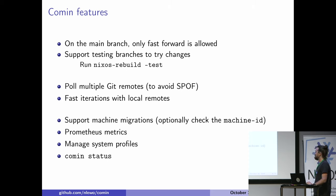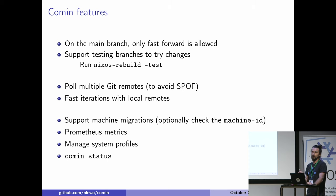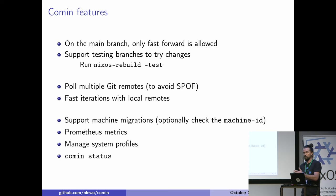Another feature is Comin is able to pull from multiple Git remotes. The first objective was to avoid a single point of failure — if one repository is not responding, Comin can fall back to another one. And there is a nice side effect: you can declare a local remote on your local file system. In that case, Comin is able to check out commits every two seconds, because it's really cheap to run a Git checkout on your local file system. This allows fast iteration, because you just have to commit locally and then Comin will check out that commit.